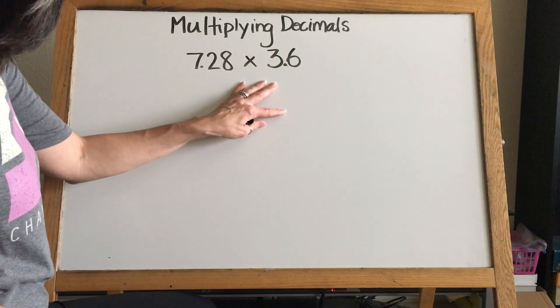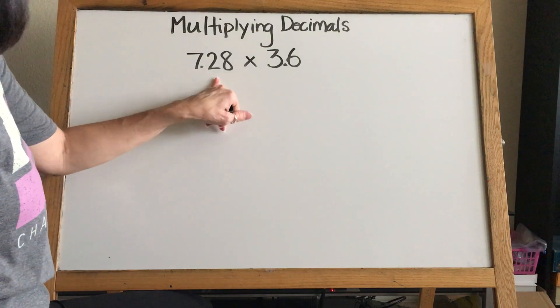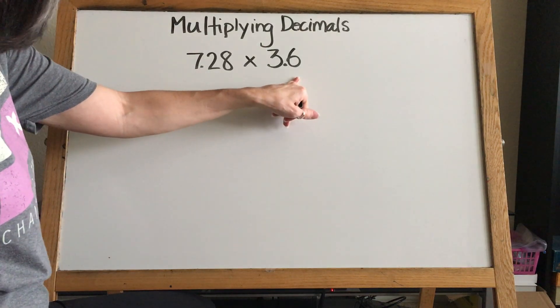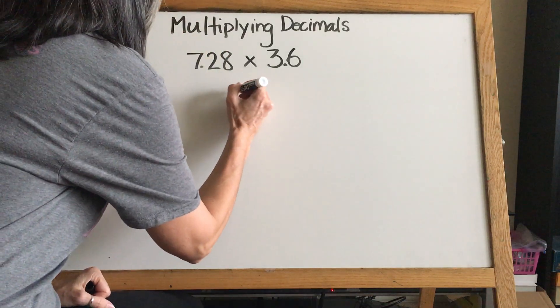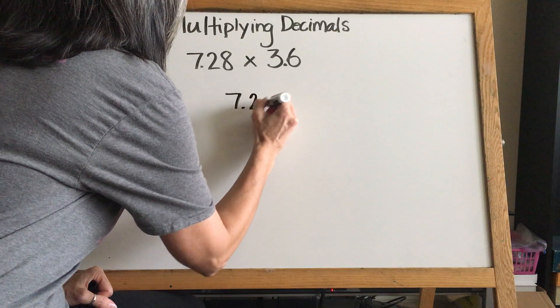Remember, I'm teaching you to think money. So this is seven dollars and 28 cents, and this is three dollars and 60 cents. We do that just to kind of make decimals a little bit easier. We're going to put the one with the most digits on top.